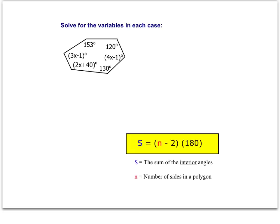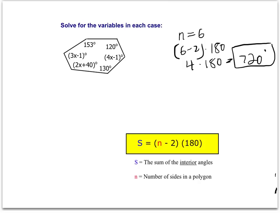The next problem has a similar setup but with more complex expressions for the angles. The first thing to do is figure out the sum of the interior angles for this polygon. We know this is a six-sided figure — a hexagon. So we plug in 6 minus 2 times 180, which is 4 times 180, or 720 degrees. The sum of the interior angles of a hexagon is 720 degrees. We'll do the same thing and set up an equation where we add each angle and set it equal to 720.